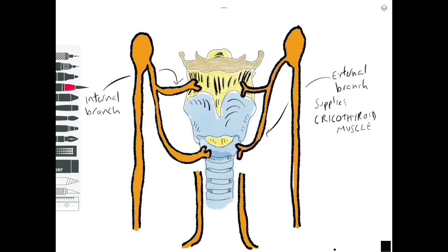The internal branch of the superior laryngeal nerve is mainly sensory and it supplies sensory innervation to above the vocal folds. So its main job is sensory to areas of the larynx above the vocal folds.